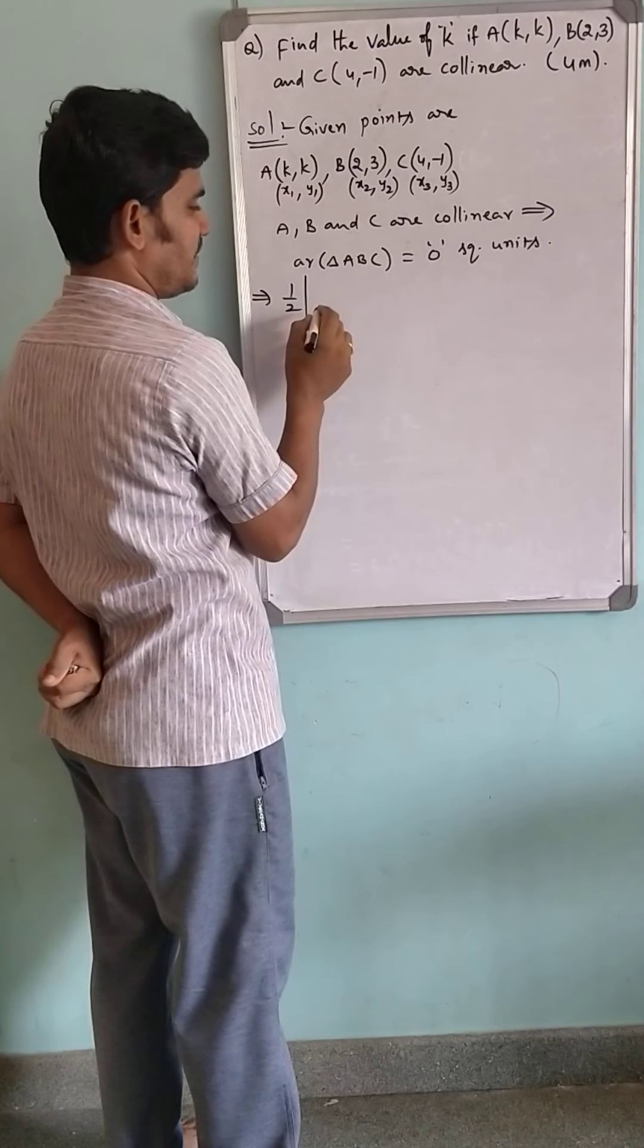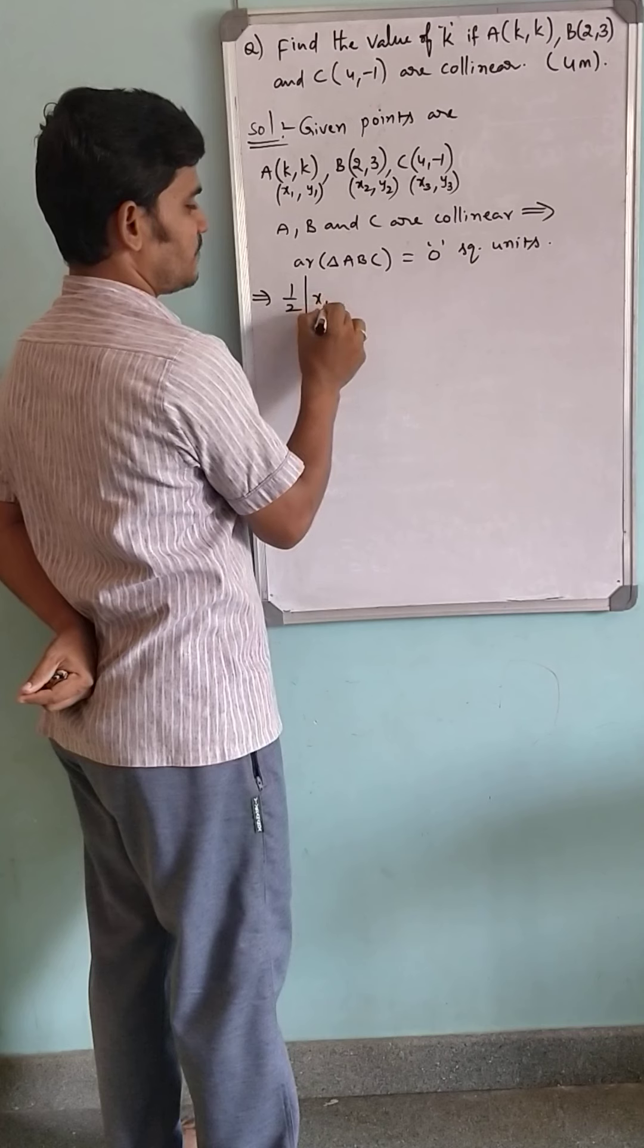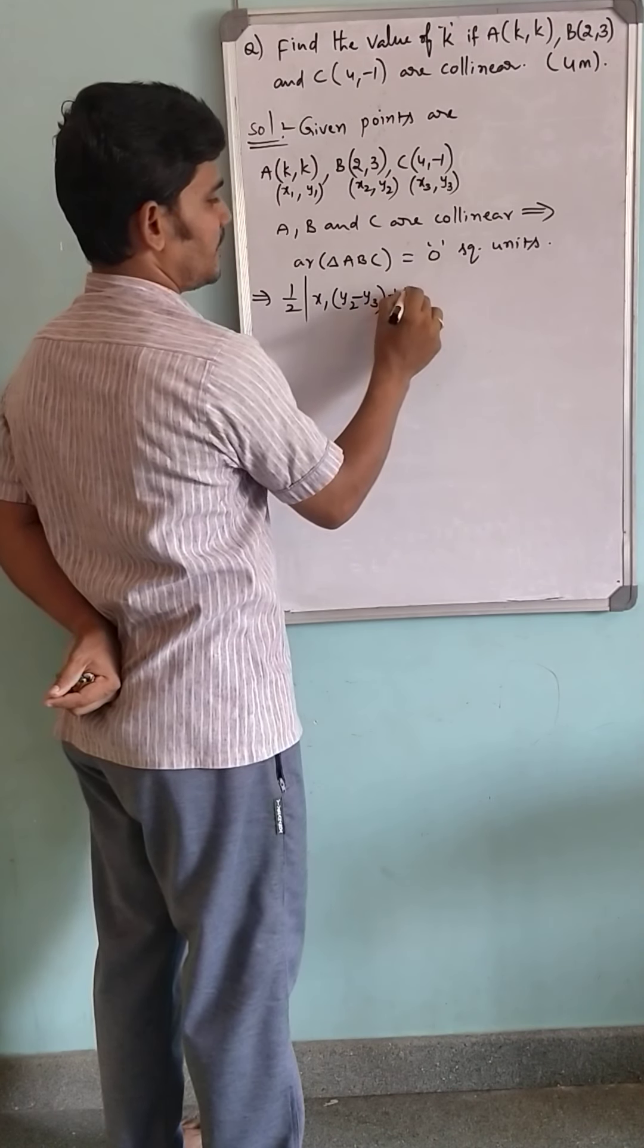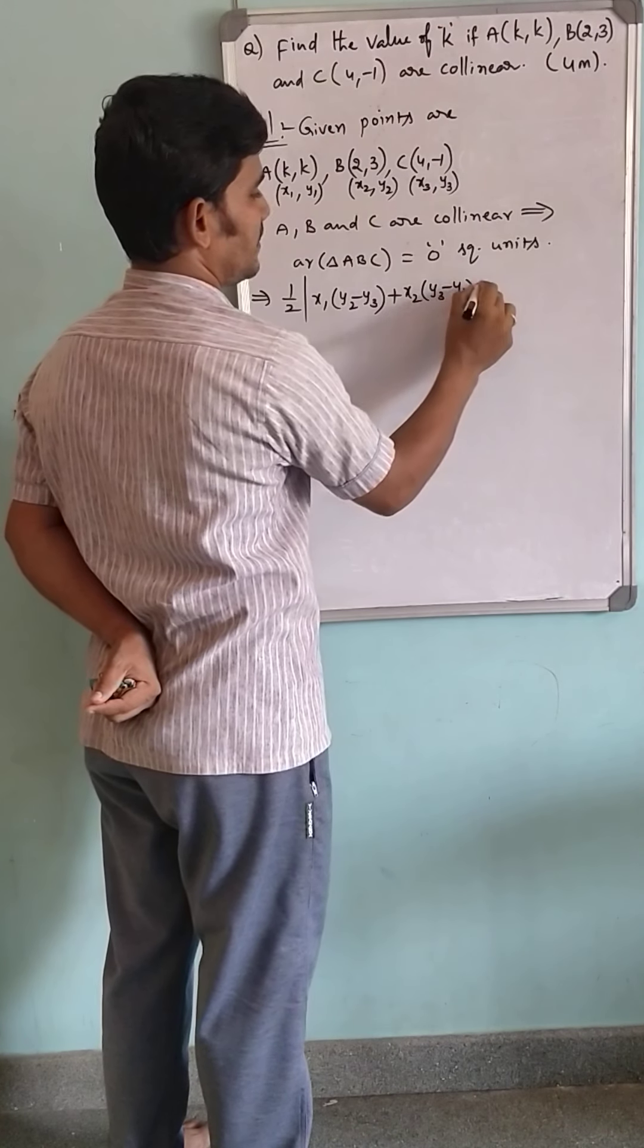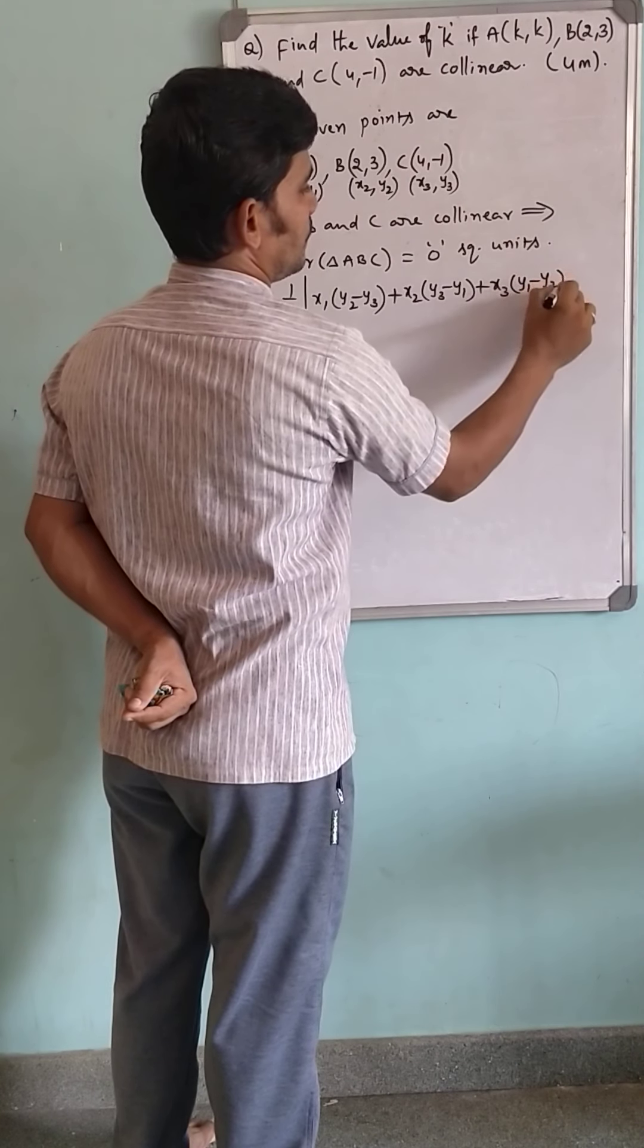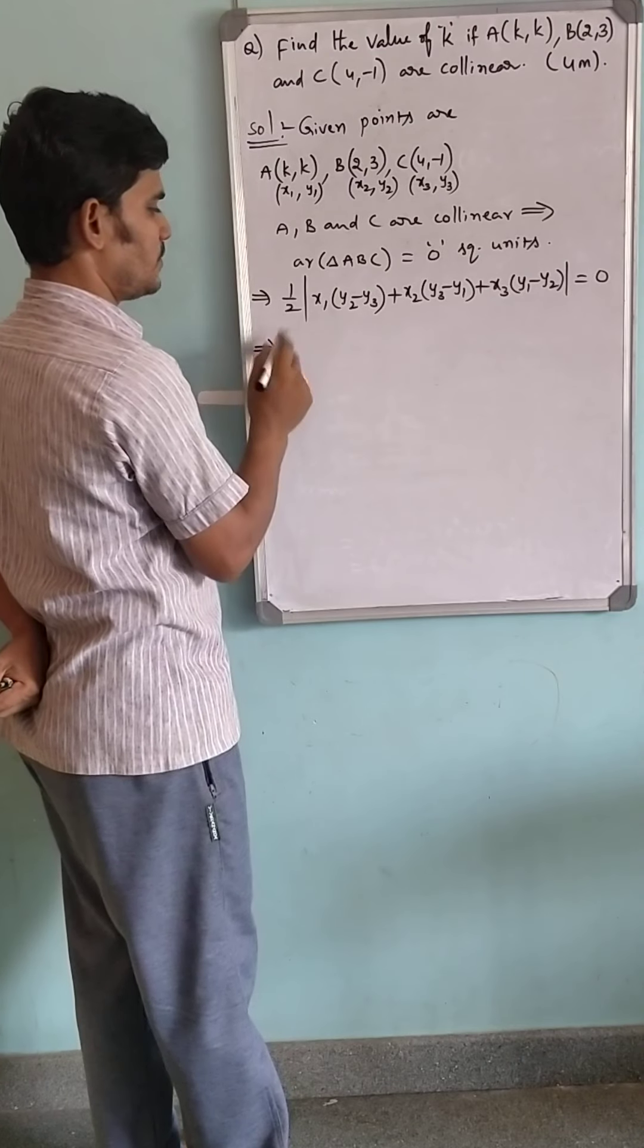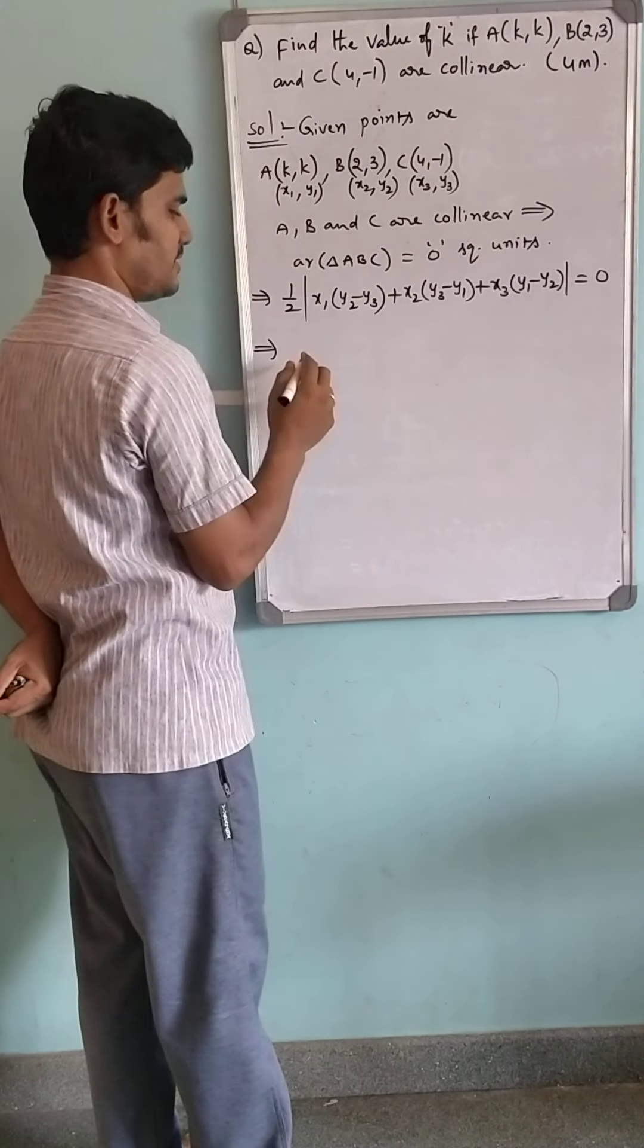The formula to find area of triangle ABC with the given points is X1(Y2 - Y3) + X2(Y3 - Y1) + X3(Y1 - Y2) = 0. The 2 is dividing, it will multiply with 0. 2 times 0 is 0.